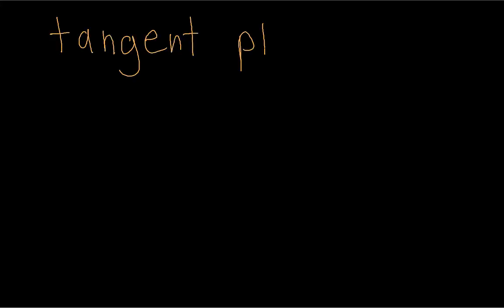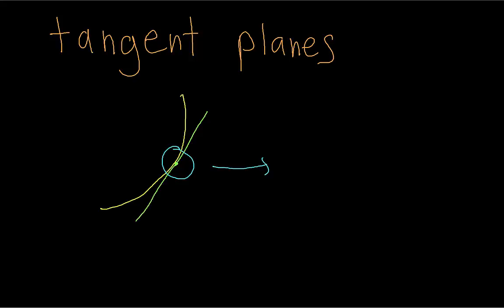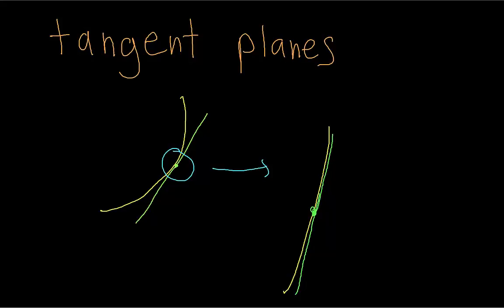The idea behind finding tangent planes to surfaces is the same as finding tangent lines to curves. If we have any curve and we zoom in on a particular point, then as we zoom in further and further, the curve looks more and more like a line — more specifically, like the tangent line to the curve at that particular point.